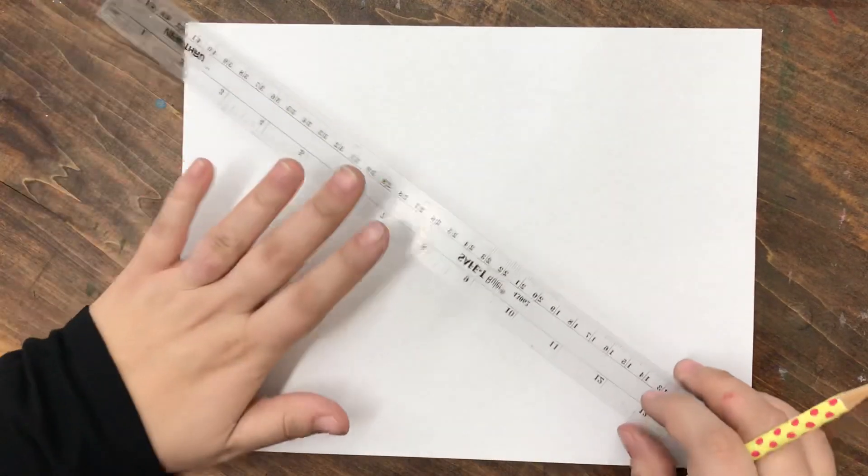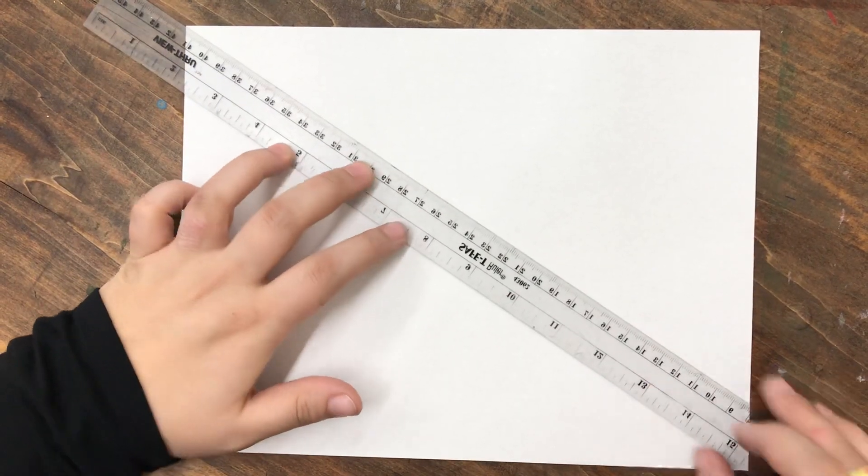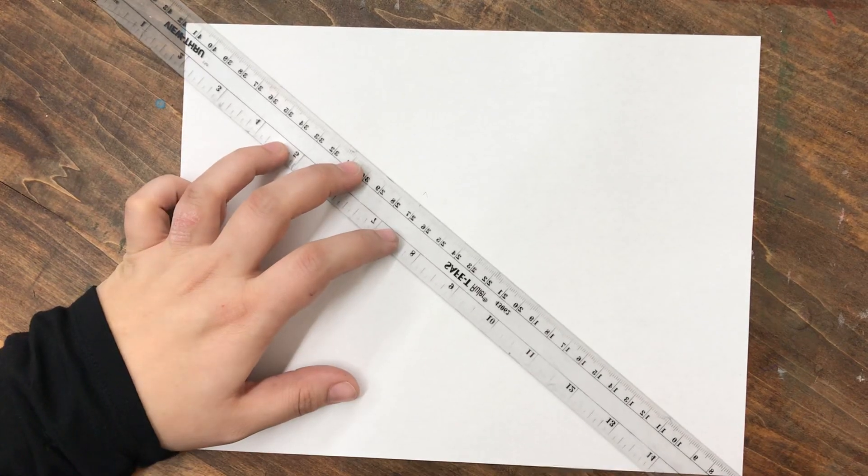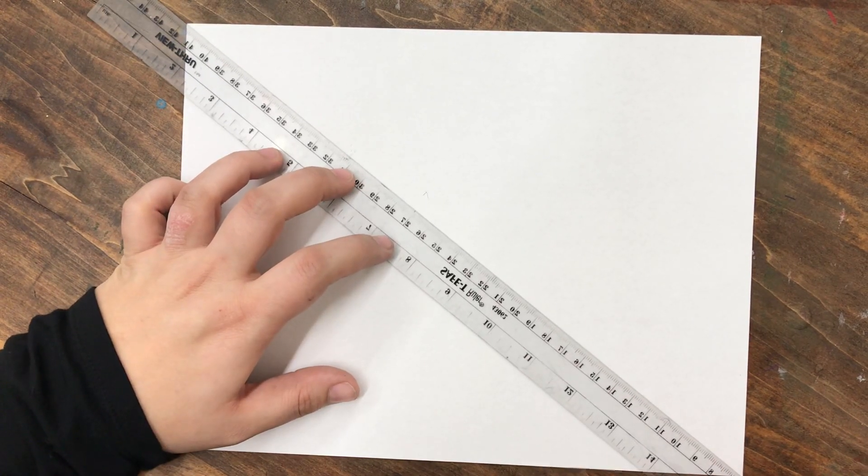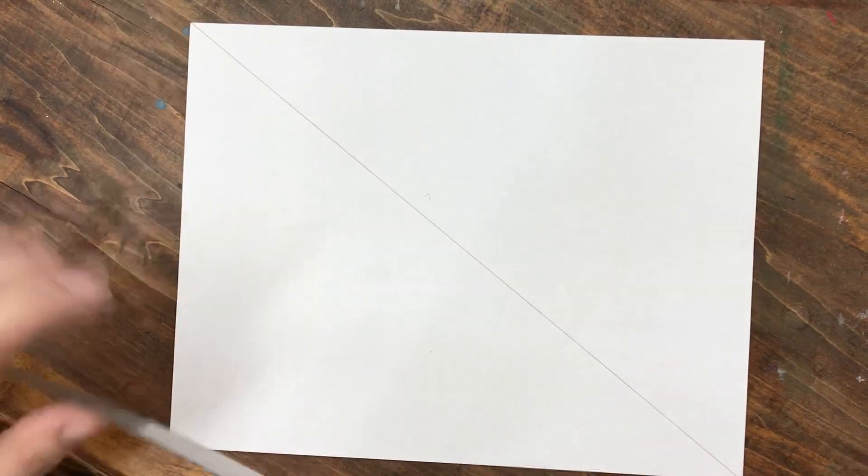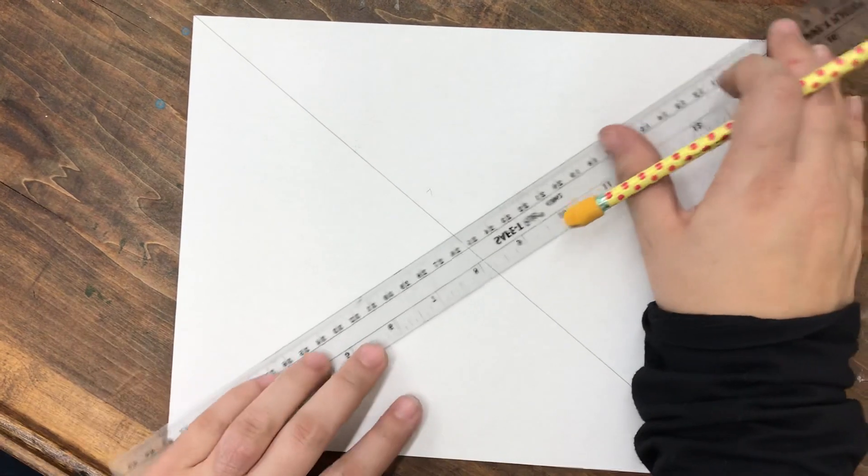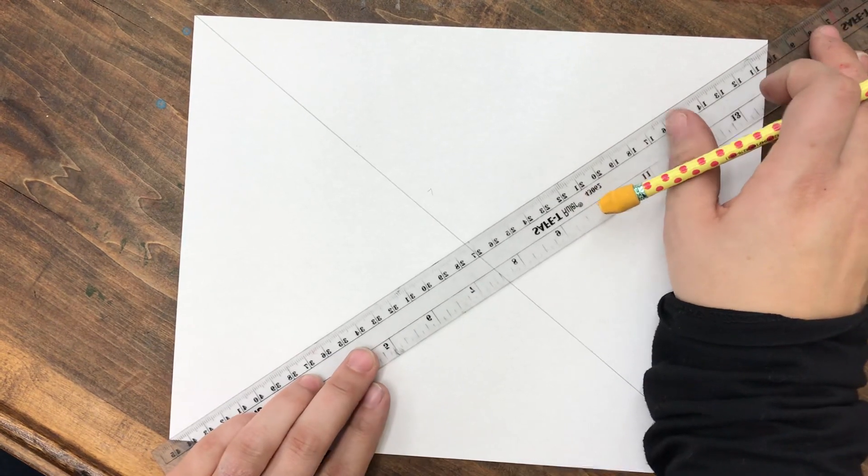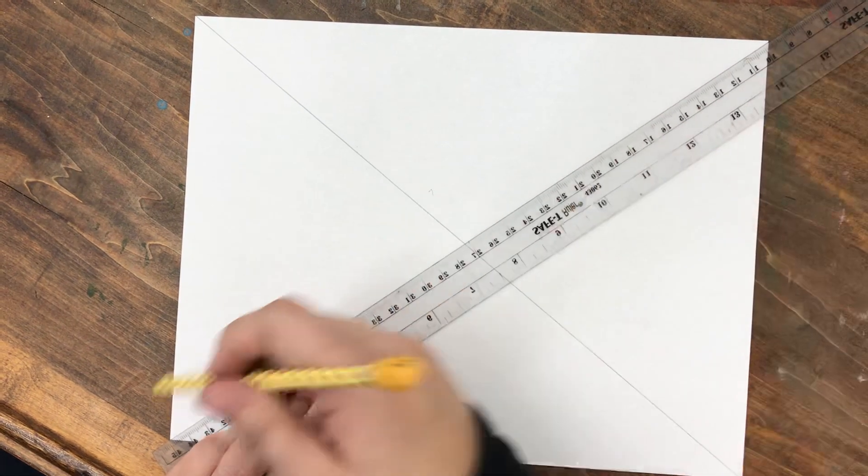The first step is with a ruler, you're going to take your plain paper and you're going to create an X across it, connecting your two corners of your paper and drawing a line. This is the X portion of the grid drawing method.